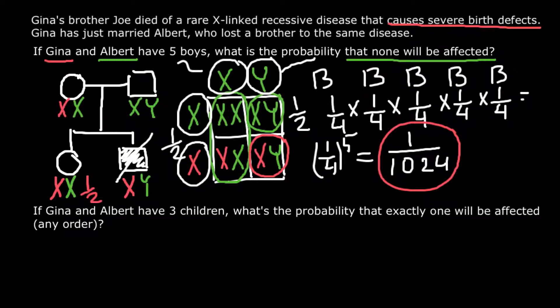The next question: if Gina and Albert have three children, what is the probability that exactly one will be affected in any order? It is very important that here we have three children and the sex is not specified — this will affect our calculations. We are looking for the probability that exactly one child will be affected if this couple has three children, in any order.